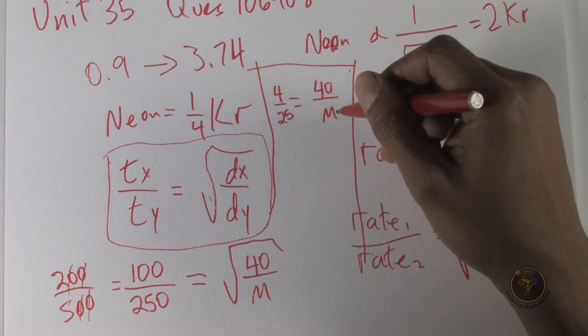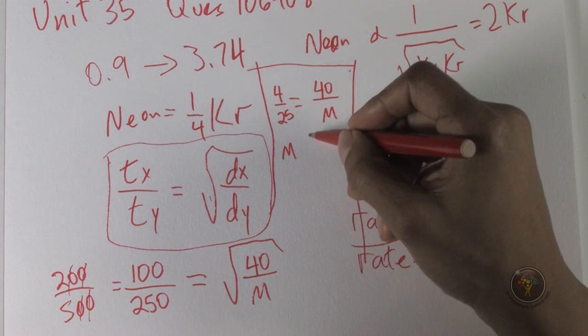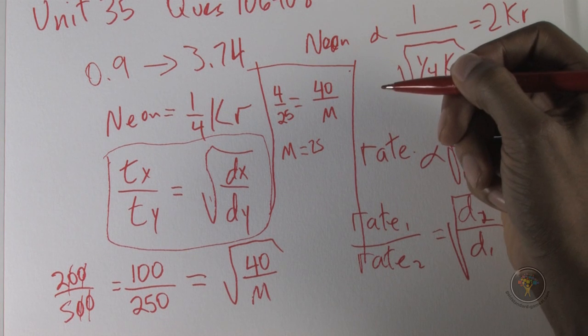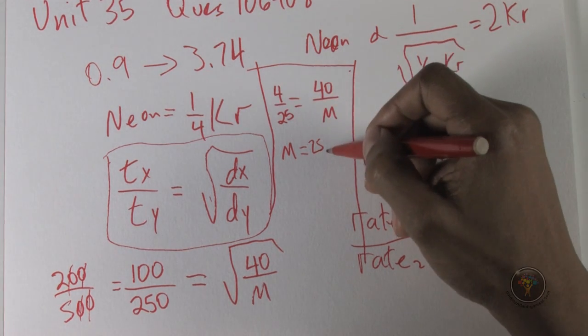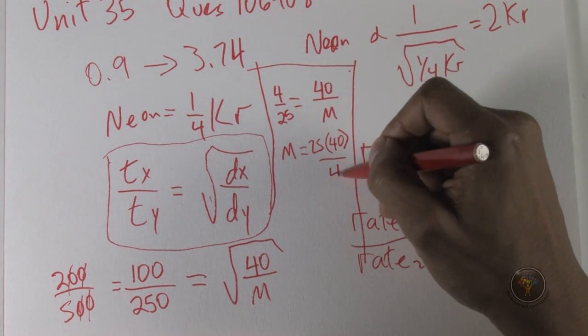So now I can cross multiply. By cross multiplying, bringing M over here, I have M over there. And then I'm going to bring 25 onto the other side, 4 comes down here.